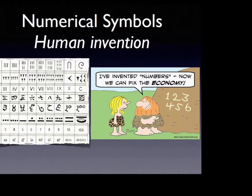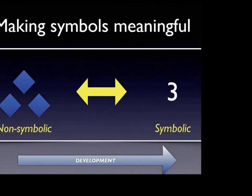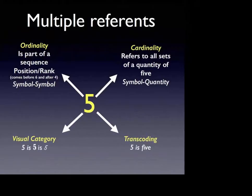And so when you have difficulty with math, it's typically you have some number sense things going on between the non-symbolic and the symbolic. And there's a direct correlation. And ordinality is a part of sequence, position, and rank. Which comes first, the six or the four?